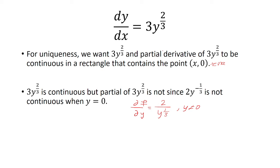So yeah, this part is not correct. So this is not continuous. So only one of the conditions will hold. The original function is continuous, but not the partial derivative. So therefore, the solution is not unique.